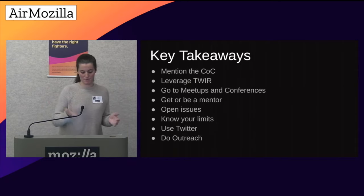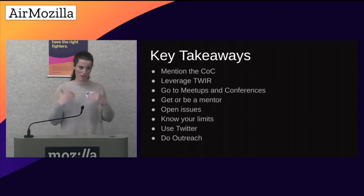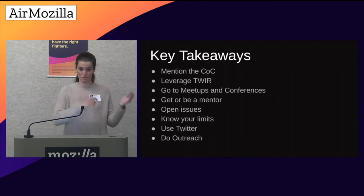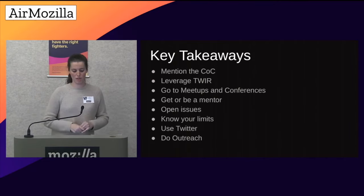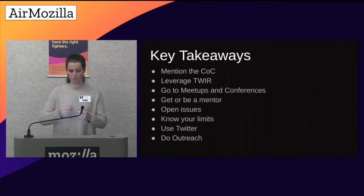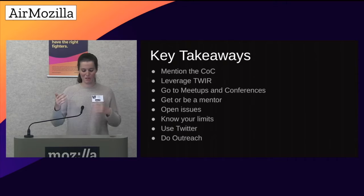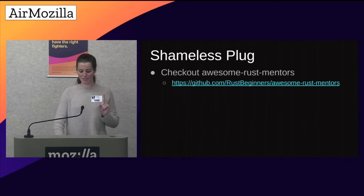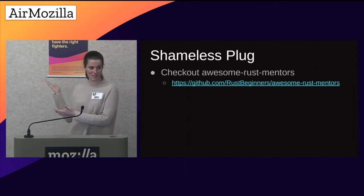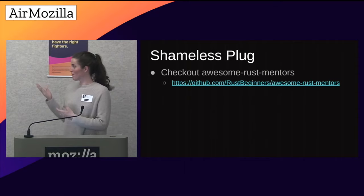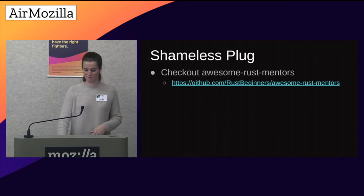The key takeaways: if you have a project, mention the code of conduct — it will help people engage. Leverage This Week in Rust — follow it or post your issues in it. Go to meetups and conferences. Get or be a mentor — mentorship had a profound impact on how involved I got. Open issues. Know your limits. Keep organized. Use Twitter. Do outreach. Manish's mentorship inspired me to start an awesome list of people interested in mentoring — if you want to mentor or find a mentor, check it out.